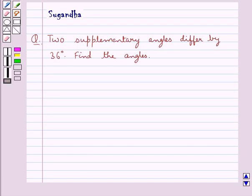Hello and welcome to the session. In this session we discuss the following question: two supplementary angles differ by 36 degrees. Find the angles.